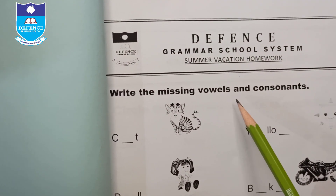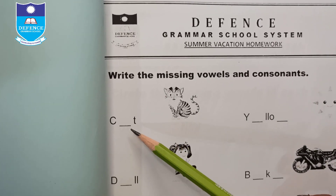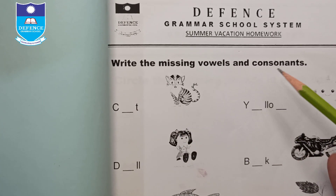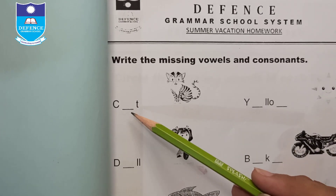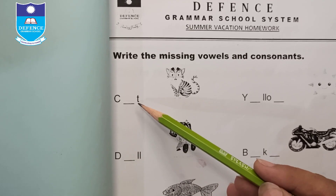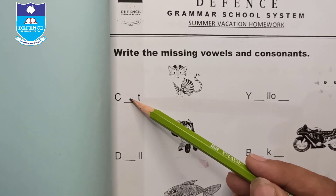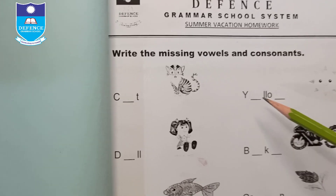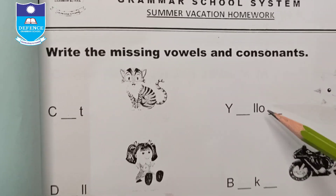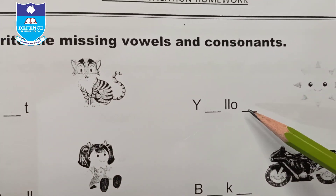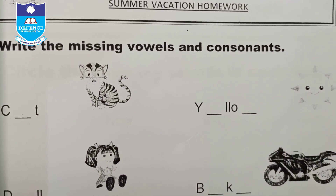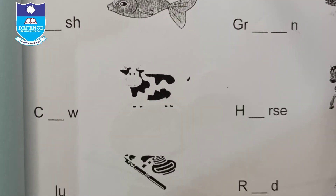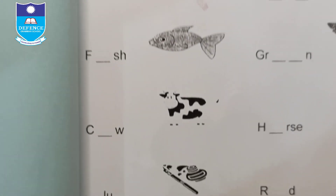Write the missing vowels and consonants. In these blanks, write the vowels or consonants. For example, C-D becomes C-A-D — here we write 'A' which is a vowel. Similarly, Y-E-L-L-O-W: complete all these blanks by writing the missing vowels and consonants.